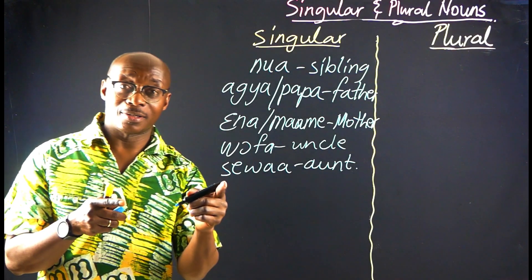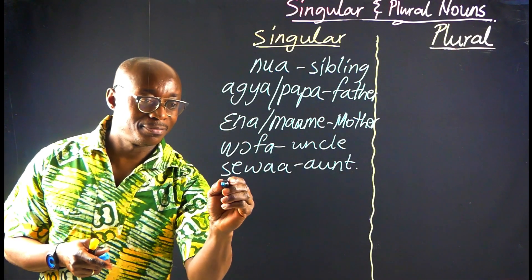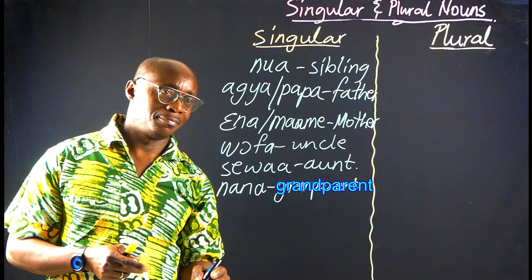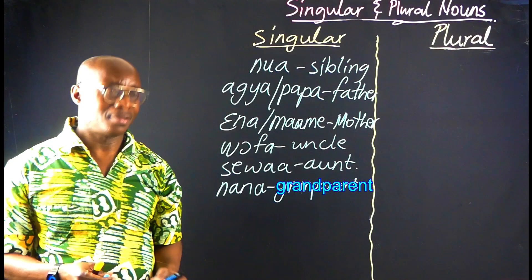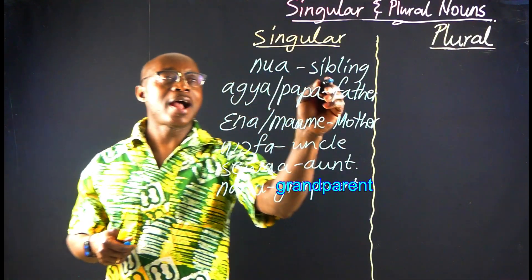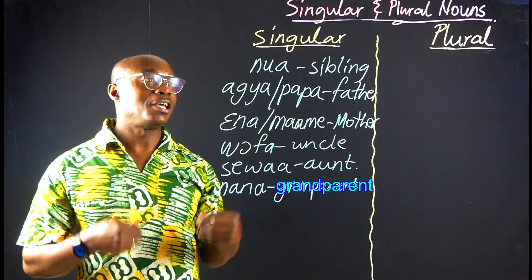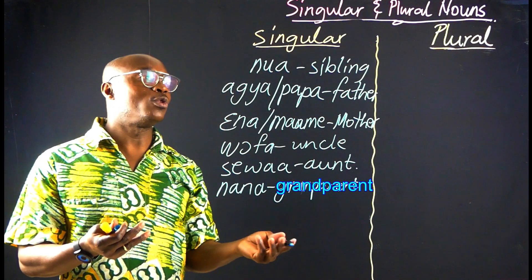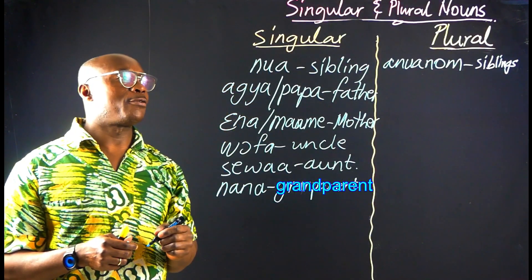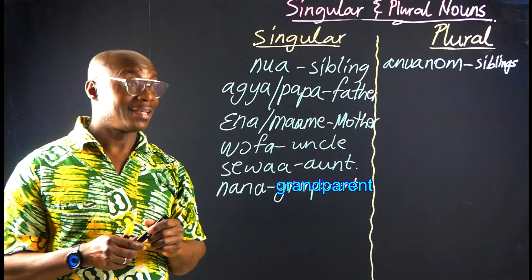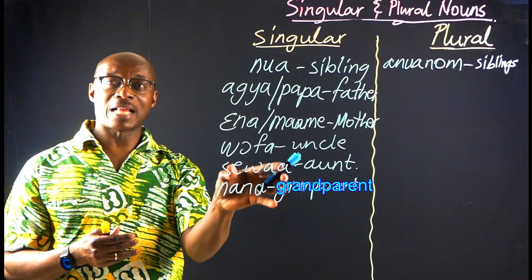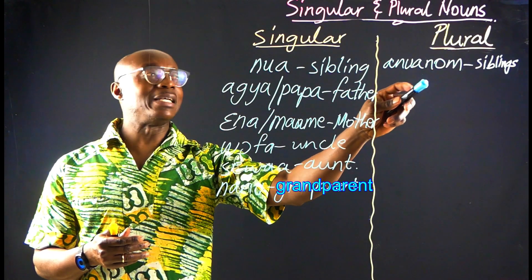And who else? Your grandparents. These are some of the examples of kinship nouns that we have. So we have Nya, and that is siblings. In plural, that is siblings — and like I said, all of these kinship nouns in the plural form take the surface noun.